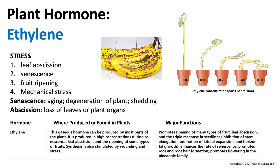Senescence is the aging or degeneration of a plant, or shedding. It is very similar to leaf abscission. So if there is any type of stress, or a plant becomes old and begins to die, ethylene will be produced.